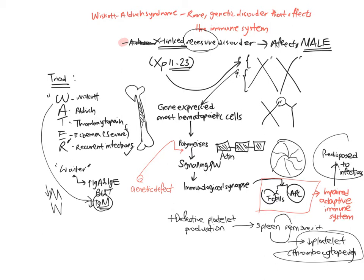Eczema occurs because of the increased IgE, and remember that IgE is linked to allergic reactions as well as parasitic infections. Thrombocytopenia occurs, as mentioned before, because the spleen removes the defective platelets.